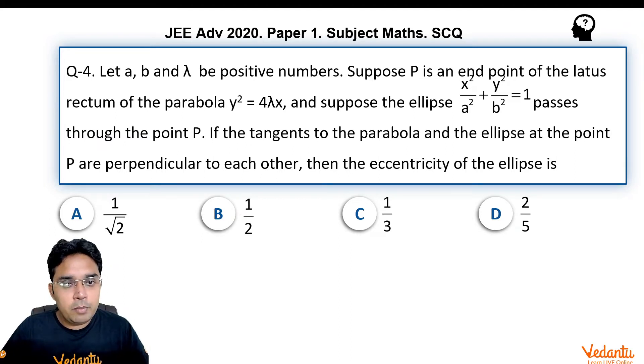Let a, b and λ be positive numbers. Suppose P is an end point of the latus rectum of parabola y² = 4λx and suppose the ellipse x²/a² + y²/b² = 1 passes through the point P. If the tangents to the parabola and ellipse at the point P are perpendicular to each other, then the eccentricity of the ellipse is.